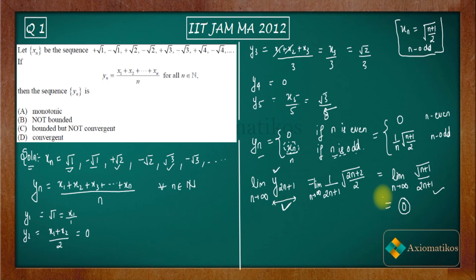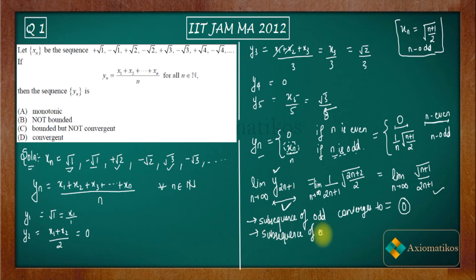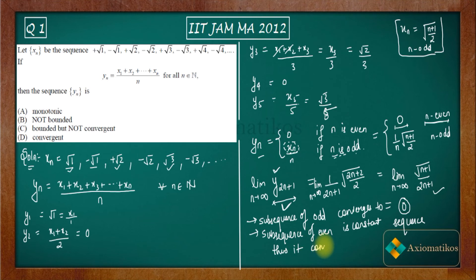For the subsequence of even-indexed terms: since yn = 0 for every even n, the even subsequence is a constant sequence equal to 0. A constant sequence trivially converges, so the subsequence of even terms also converges to 0.